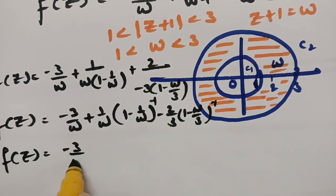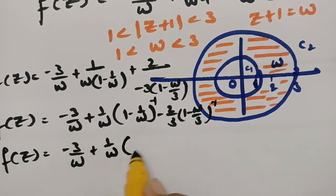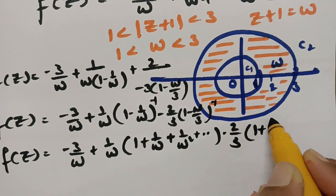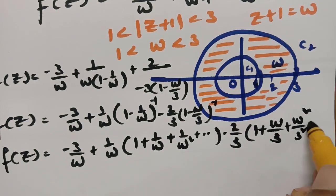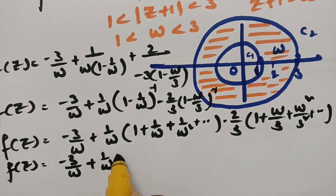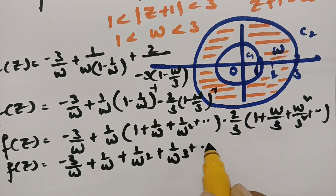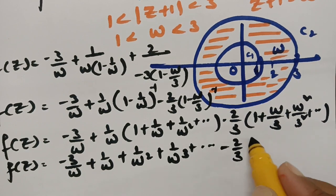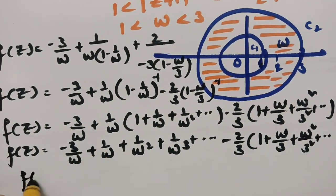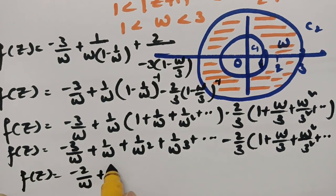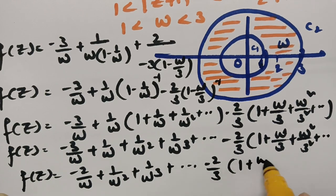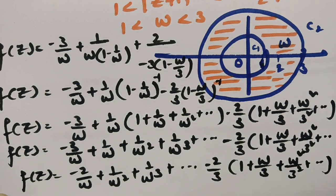Expanding using (1-x)^{-1} = 1 + x + x² + ...: f(z) = -3/w + (1/w)(1 + 1/w + 1/w² + ...) - (2/3)(1 + w/3 + w²/9 + ...). Collecting terms: f(z) = -2/w + 1/w² + 1/w³ + ... - 2/3(1 + w/3 + w²/9 + ...).